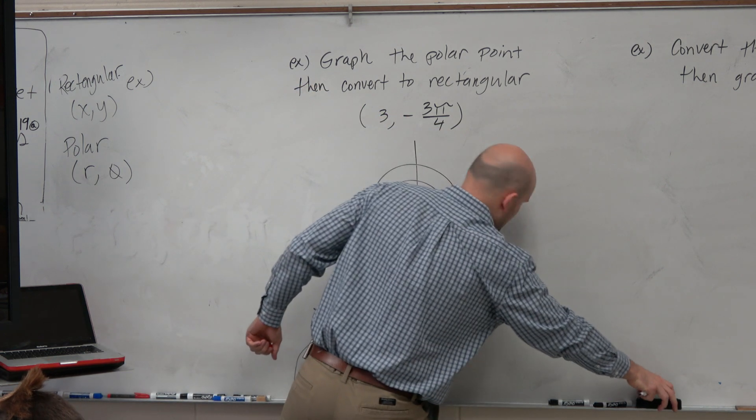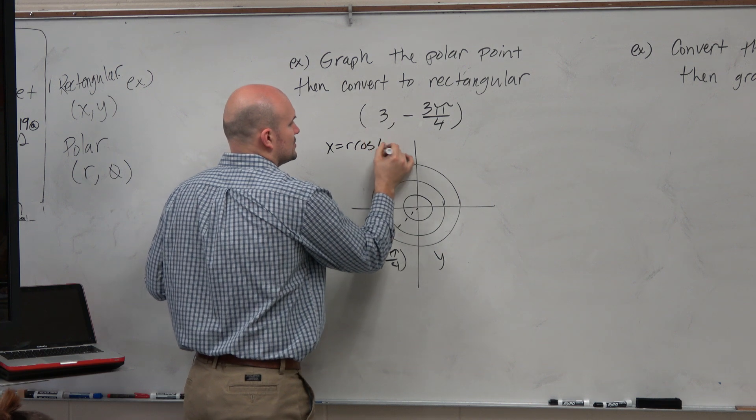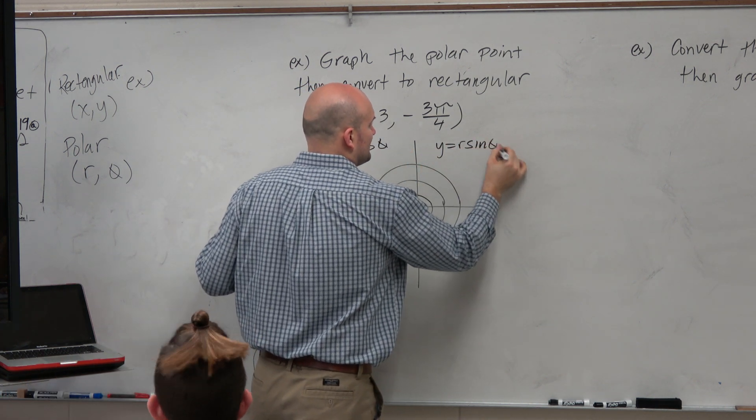So let me rewrite them again. So anyways, you guys have x equals r times cosine of theta, and y equals r sine of theta.